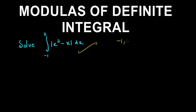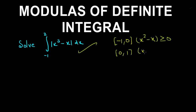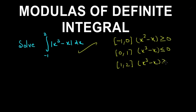From minus 1 to 0, x cubed minus x is greater than or equal to 0. From 0 to 1, x cubed minus x is less than or equal to 0. And from 1 to 2, this function is again greater than or equal to 0. So we break this limit into three parts.